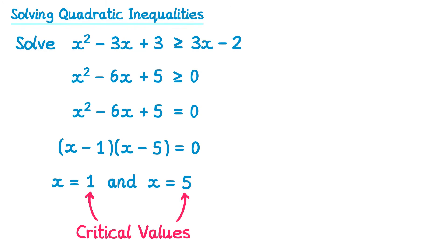Instead of drawing the graph, we'll draw out just the x axis, and we'll plot on the critical values, x is 1, and x is 5. These critical values split the x axis into three distinct sections. The first section here on the left is when x is less than or equal to 1. The next section in the middle is when x is in between 1 and 5, and the final section is when x is greater than or equal to 5. Notice I've used less than or equal to's and greater than or equal to's due to the symbol in the question.